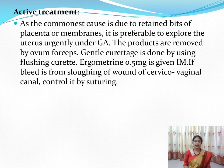Active treatment of secondary PPH: if retained bits of placenta or membranes are present, explore the uterus under general anesthesia and remove the products using ovum forceps. Gentle curettage using a flushing curette can also be performed. After removing the products, give ergometrine 0.5 mg intramuscularly. If bleeding is from sloughing of a wound or the cervical/vaginal canal, control it by suturing the wound and start antibiotics.